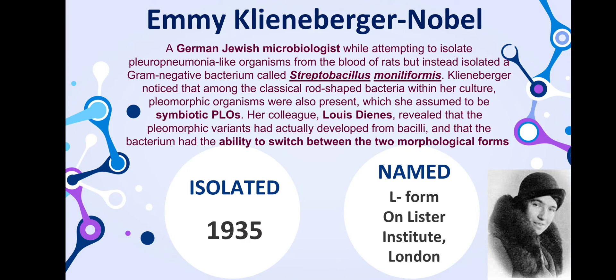Amy Kleineberger-Noble, a German-Jewish microbiologist, isolated the gram-negative bacterium Streptobacillus moniliformis from the blood of rats and observed organisms without a cell wall, initially thinking them to be symbiotic pleuropneumonia-like organisms. Later, when she saw they could switch between two morphological forms, she isolated these organisms and named them L-forms in 1935. The 'L' comes from the Lister Institute in London, where she was working at the time.